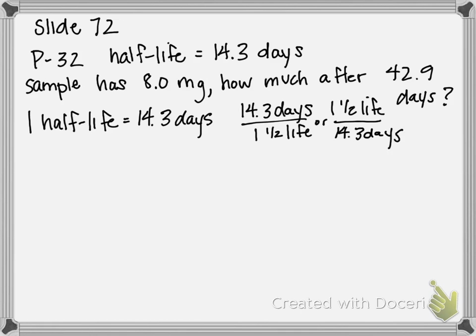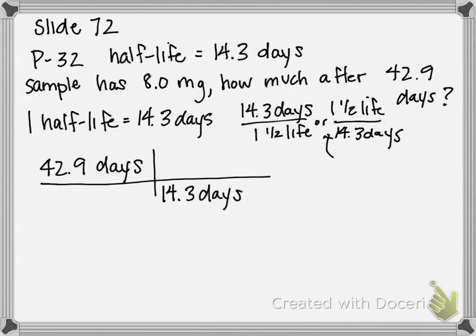So to figure out how many half-lives are in 42.9 days, we're going to start with 42.9 days. And we're going to divide by the number of days in one half-life. So we're going to use this conversion. So 14.3 days has one half-life. And if I divide, I get that three half-lives are contained in 42.9 days.